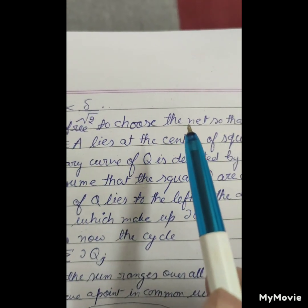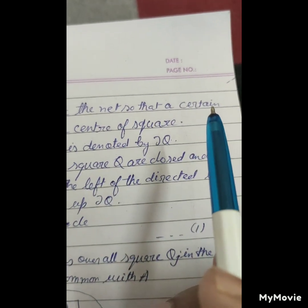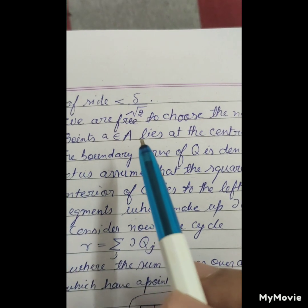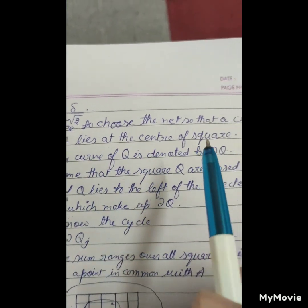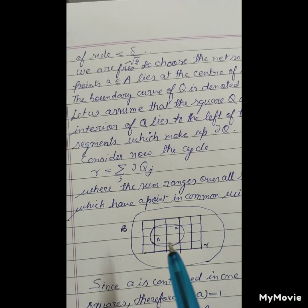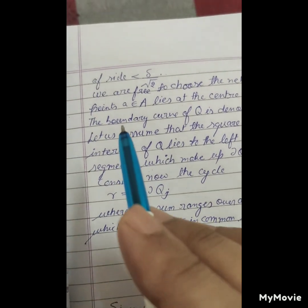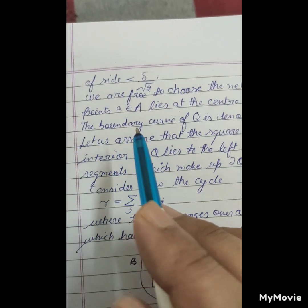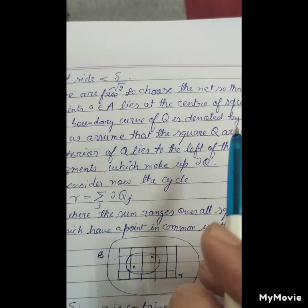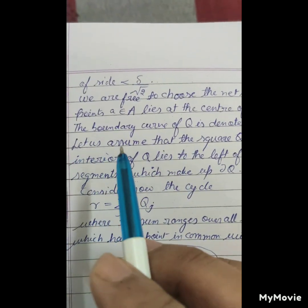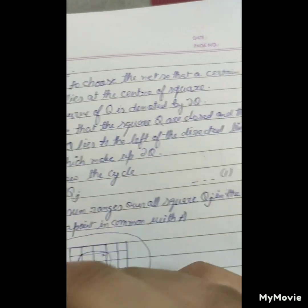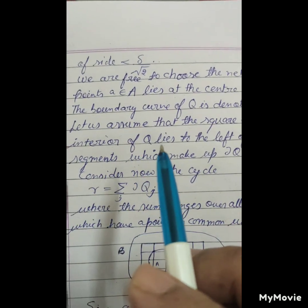So that a certain point a belonging to capital A lies at the center of the square. The boundary curve of Q is denoted by delta Q. Let us assume that the squares Q are closed and the interior of Q lies left of the directed line segments which make up delta Q.